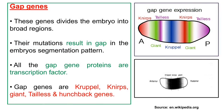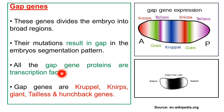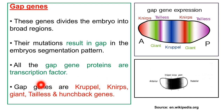Gap genes divide the embryo into broad regions and are so named because mutations in these genes result in gaps in the embryo segmentation pattern. All gap gene proteins are transcription factors. In addition to hunchback, four other gap genes are Krüppel, Knirps, giant, and tailless. All these genes are expressed as discrete bands in the embryo.